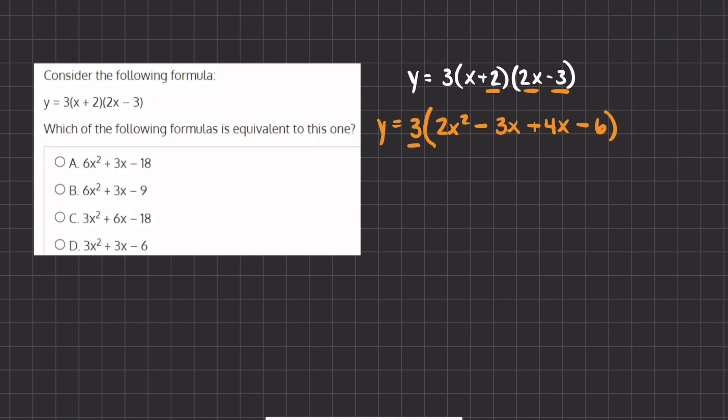Now we can take this 3 and distribute it into our parentheses, but before we do so we will simplify this negative 3x and 4x, and that will give us a positive x. So now we have y equals 3 times 2x squared which will give us 6x squared, and 3 times x will give us 3x, and 3 times negative 6 will give us a negative 18.